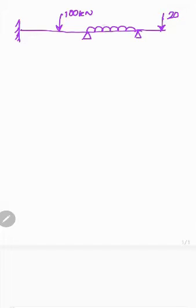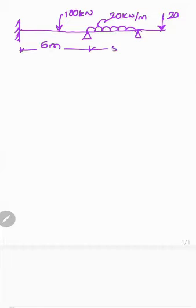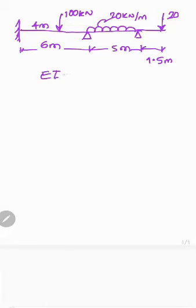100 kilonewton, and this is 20 kilonewton per meter. The first span is 6 meters, second span is 5 meters, and the overhang is 1.5 meters. The internal span is 4 meters. The value of EI — rigidity — is given as 24,000 kilonewton meter squared.